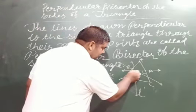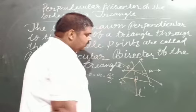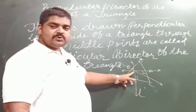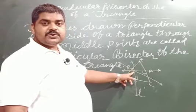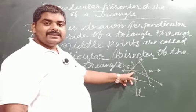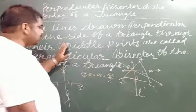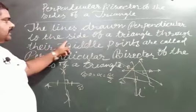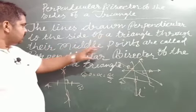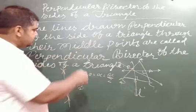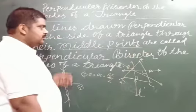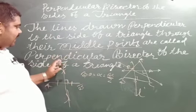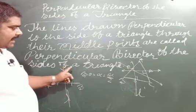The point where all three perpendicular bisectors meet is known as the circumcenter of a triangle. The perpendicular bisector is defined as the line drawn perpendicular to the side of a triangle through its midpoint — and that line passing through the midpoint perpendicularly is known as the perpendicular bisector of the side of the triangle.